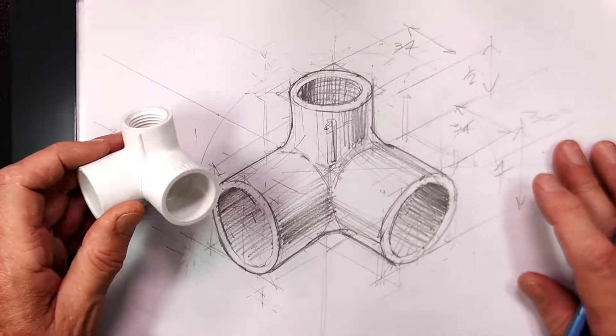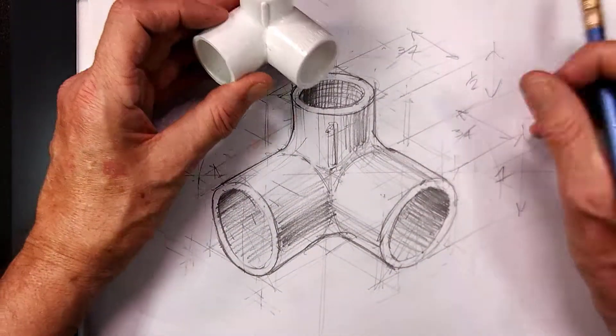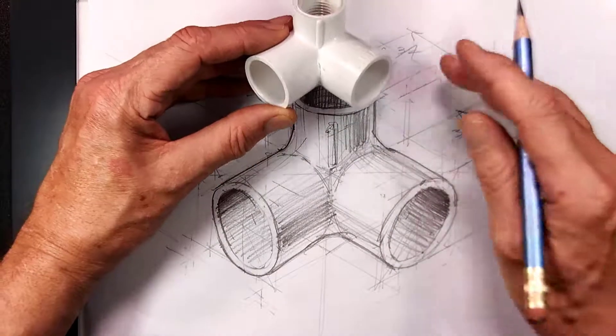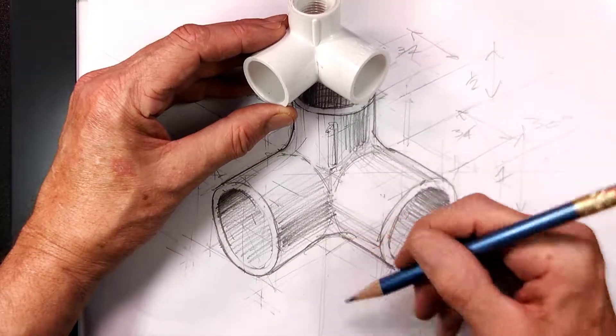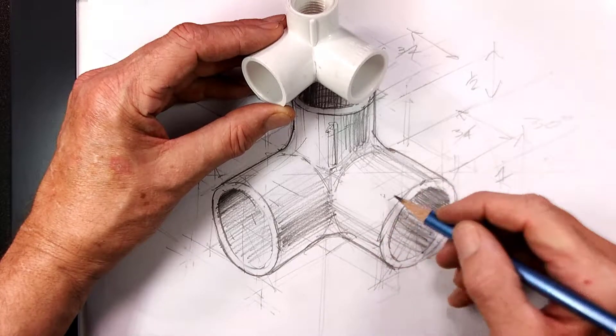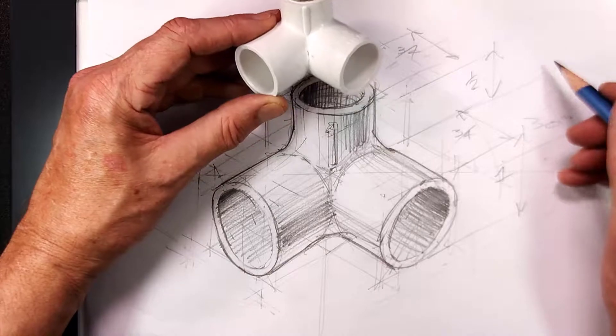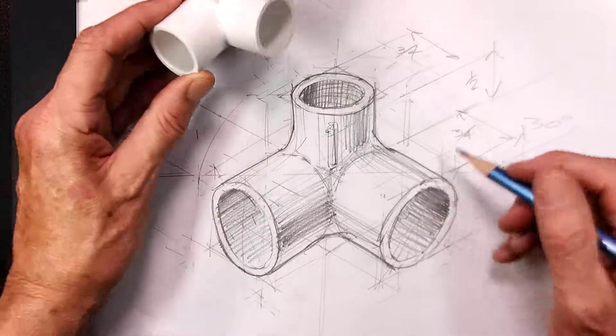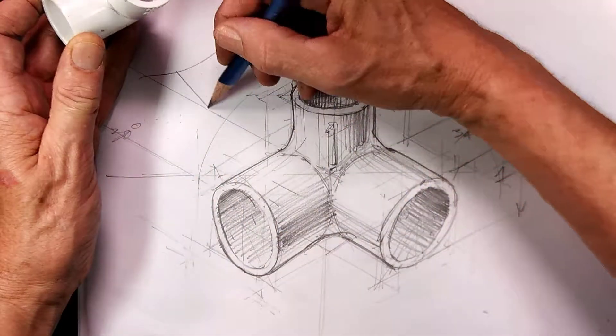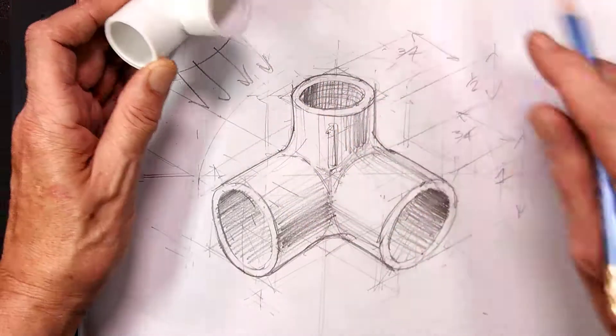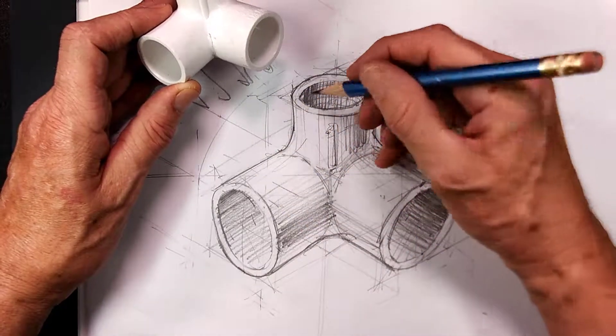Okay, this is my isometric drawing of this PVC connector. It has three-dimensional shape, equal scale, same scale on all three axes, but it does not have true shape. And you can see what I did is I added some shading because my light source is coming from 10 or 11 o'clock.